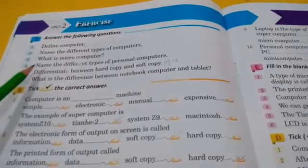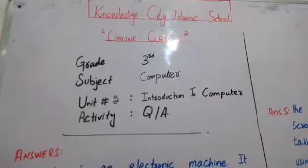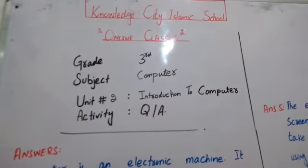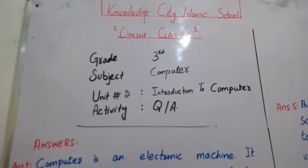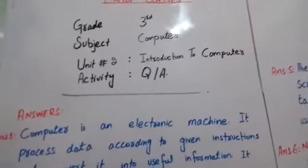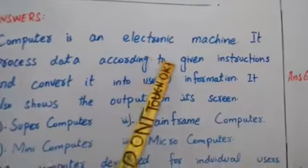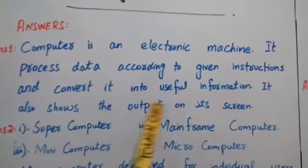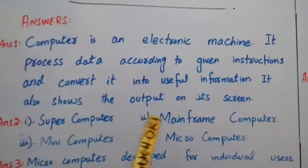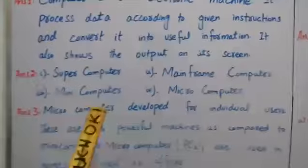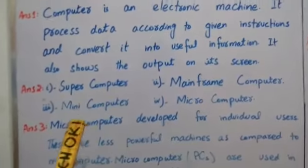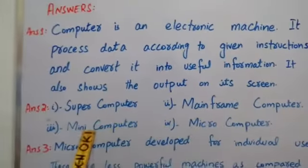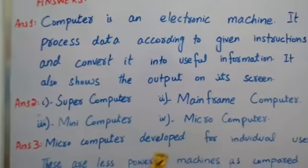Now for question and answer, come to the whiteboard. Students, you have questions that you need to see from the book, and the answers you have to copy from the whiteboard into your neat copy. First question: Define computer. Answer: Computer is an electronic machine. It processes data according to given instructions and converts it into useful information. It also shows the output on its screen. Question number two: Name the different types of computer. Answer: Super computer, mainframe computer, mini computer, and micro computer.